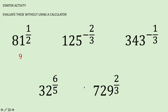Moving on to the middle example at the top: we've got 125 to the power of negative 2 over 3. The 3 on the denominator of the fraction tells us to do the cube root of the value, which is 5. The 2 on the numerator then tells us to raise that value to that power, so 5 squared gives us 25.